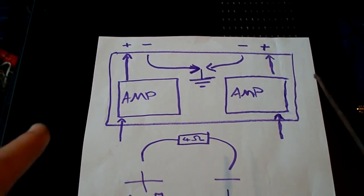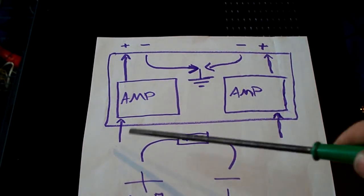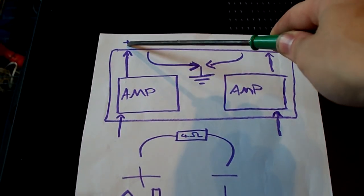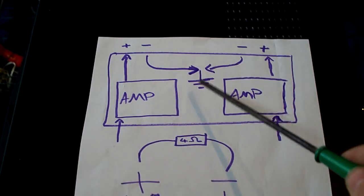So basically, this is your standard stereo amplifier. You've got two separate mono amplifiers inside. Signal comes in, goes through, comes out the plus. And then the minus doesn't do any work. The minus basically just goes to a ground.